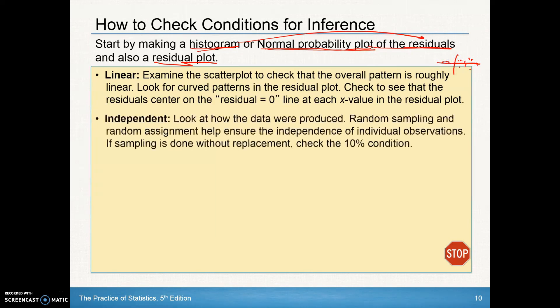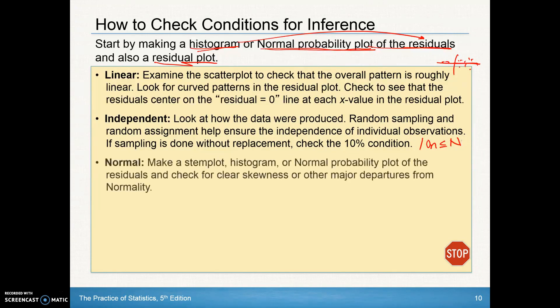Independence, look at how the data are produced. Random sampling and random assignment help ensure the independence of individual observations but if sampling is done without replacement check that 10% condition again that 10 times n is less than or equal to our population. Normal, we're going to make a stem plot or a histogram, probably suggest a histogram, or you can use that normal probability plot but make sure you do it of the residuals and look for clear skewness or other major departures, in other words outliers from normality.